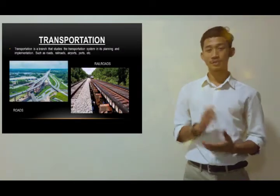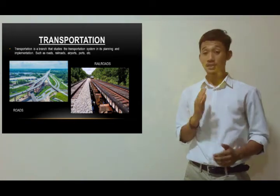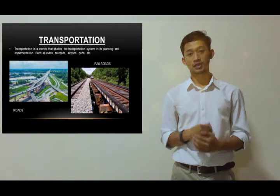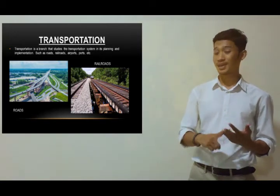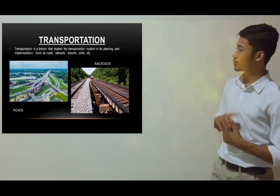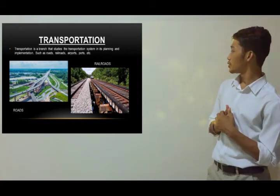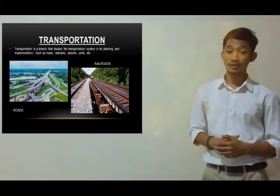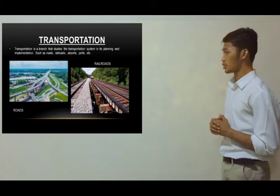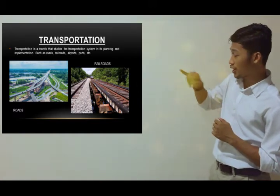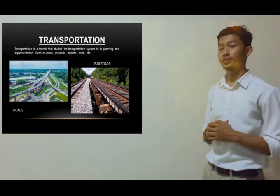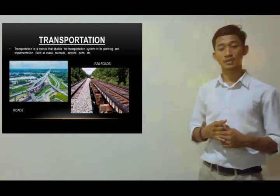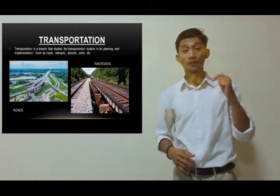Second is transportation. From this page I will explain about transportation. Transportation is a branch that studies the transportation system in its planning and implementation, such as routes, rail routes, airports, and so on. As you can see from this picture, this is what we call routes, and this one is what we call rail routes.